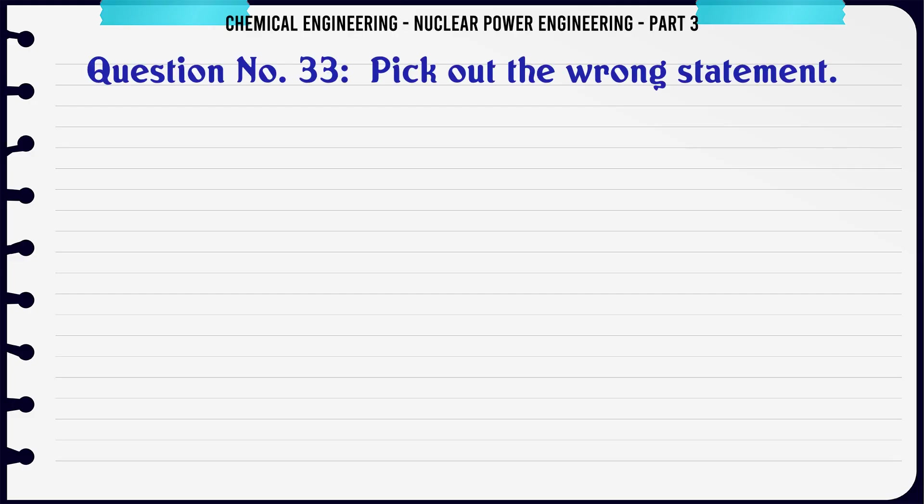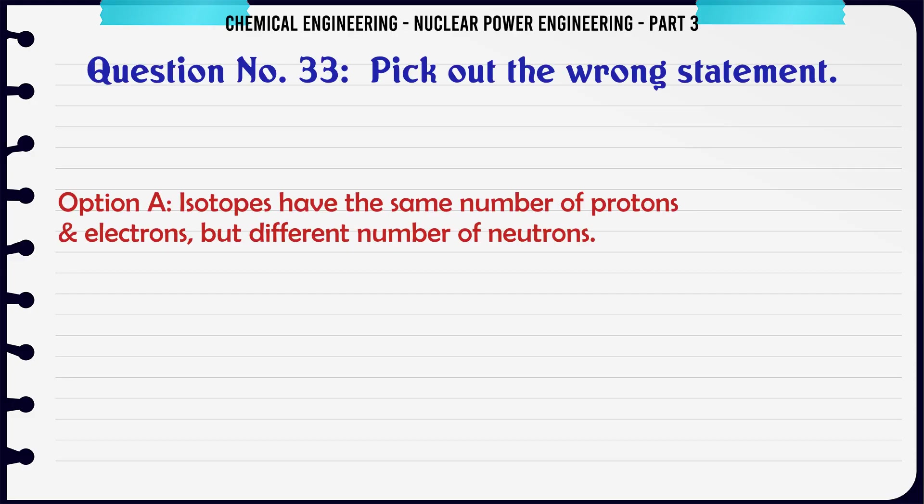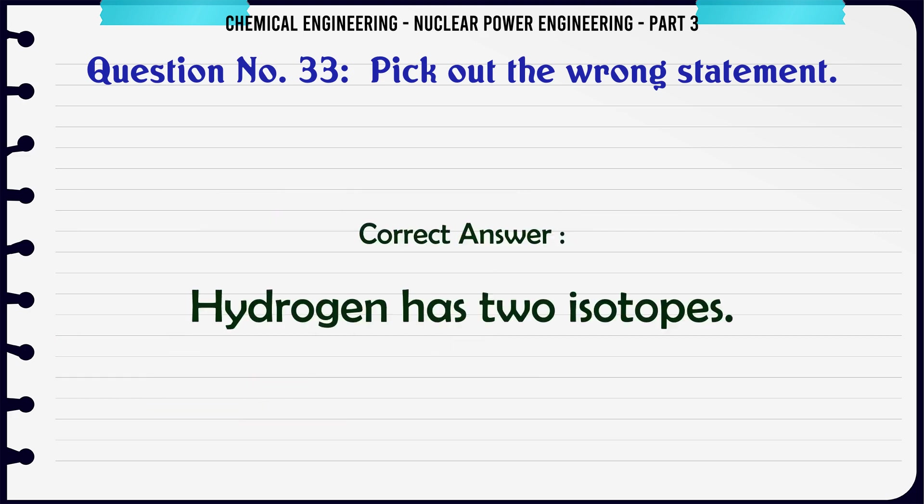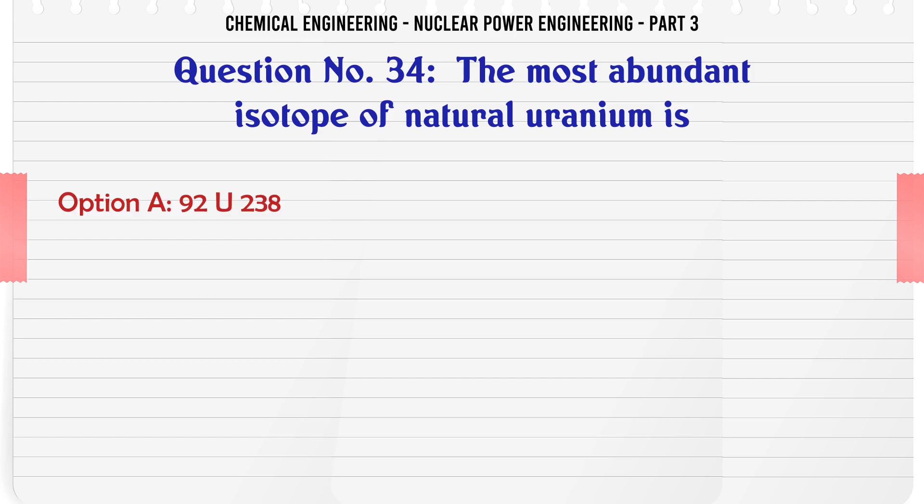Pick out the wrong statement. Isotopes have the same number of protons and electrons but different number of neutrons. Hydrogen has two isotopes. In ordinary hydrogen, 1H1 and 1H2 are present in the ratio 6400 to 1. The correct answer is hydrogen has two isotopes.